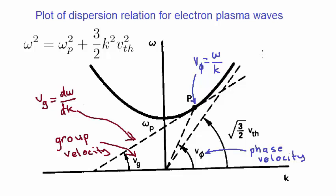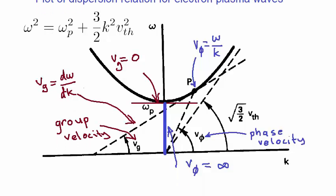As you can see, the group velocity at the origin is zero, because the tangent to the curve has zero slope. Also, the phase velocity at the origin is infinite, because the slope of the line between the origin and the curve is infinite.